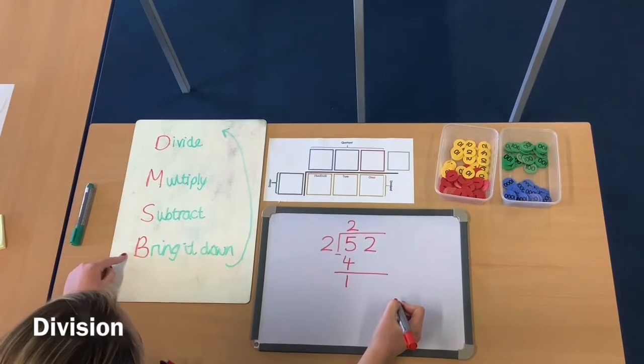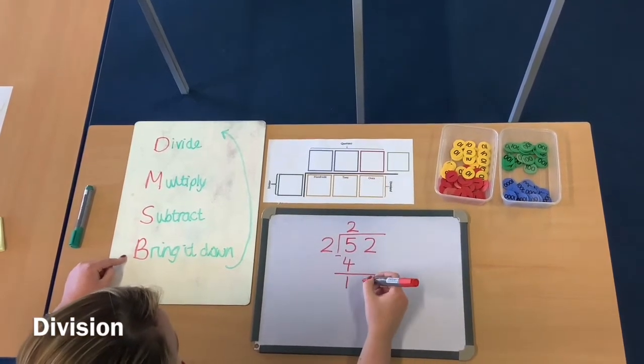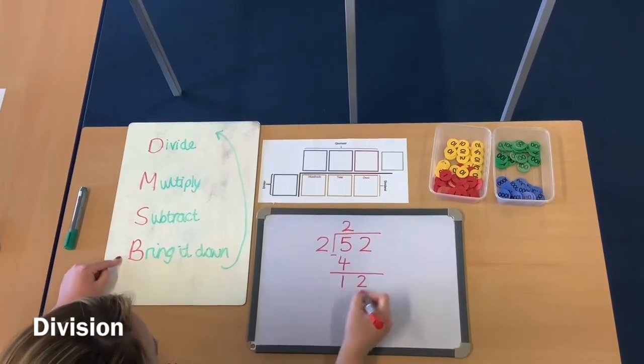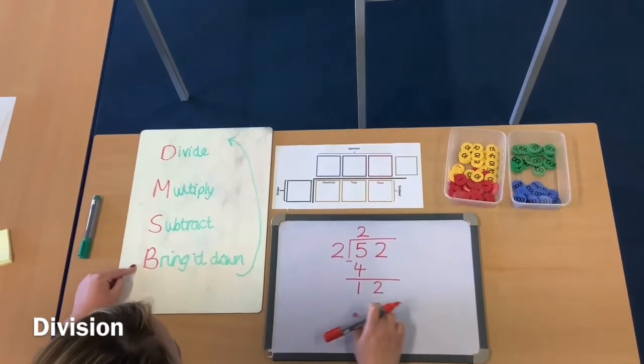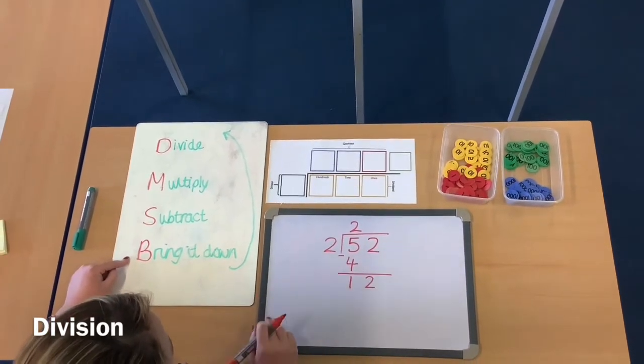And then step 4 is bring it down. So my next number is my 2 ones. So my 2 ones I then bring down so that I've got 12. I then look at the 12. That's what I've got left in my dividend.